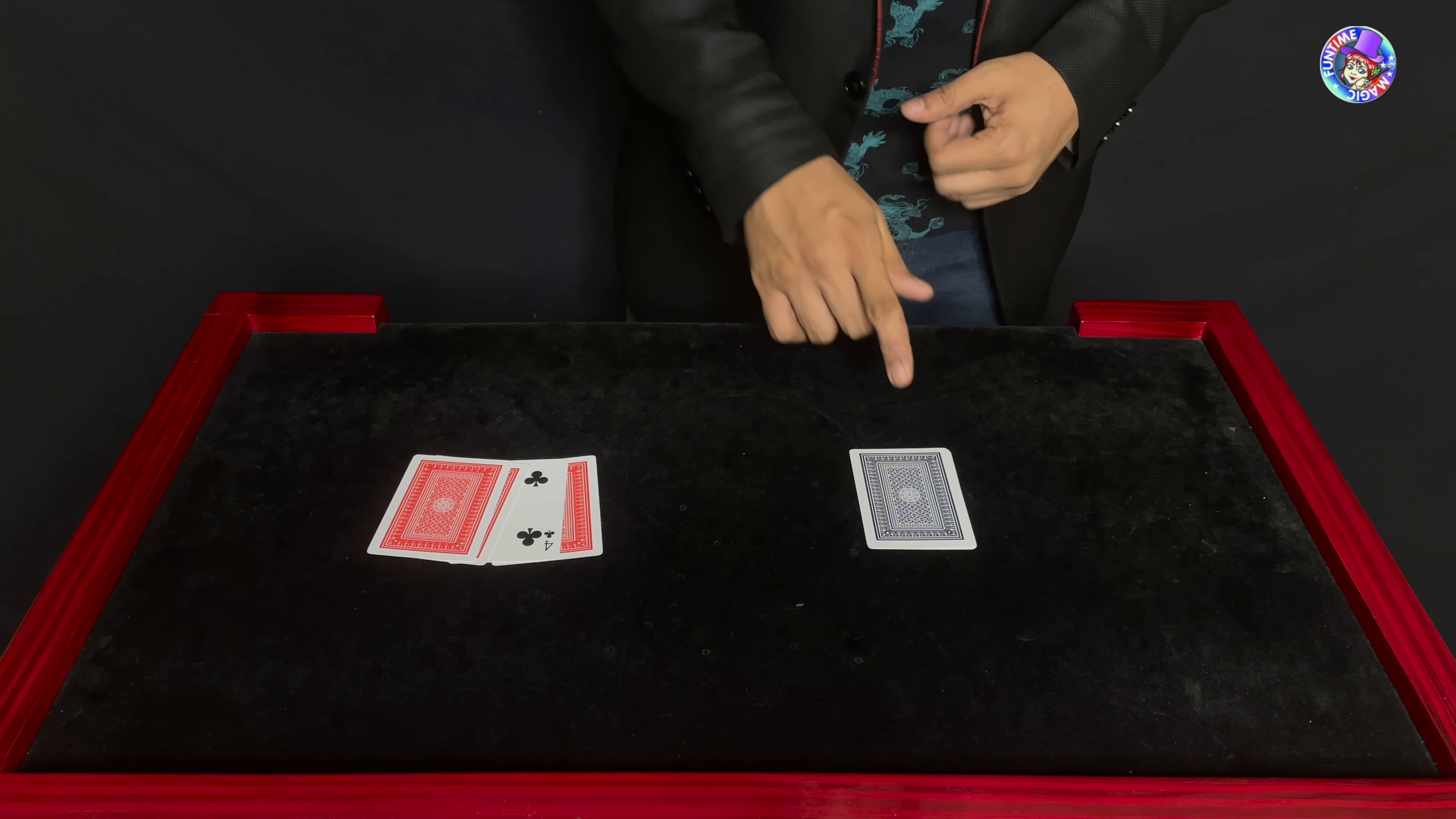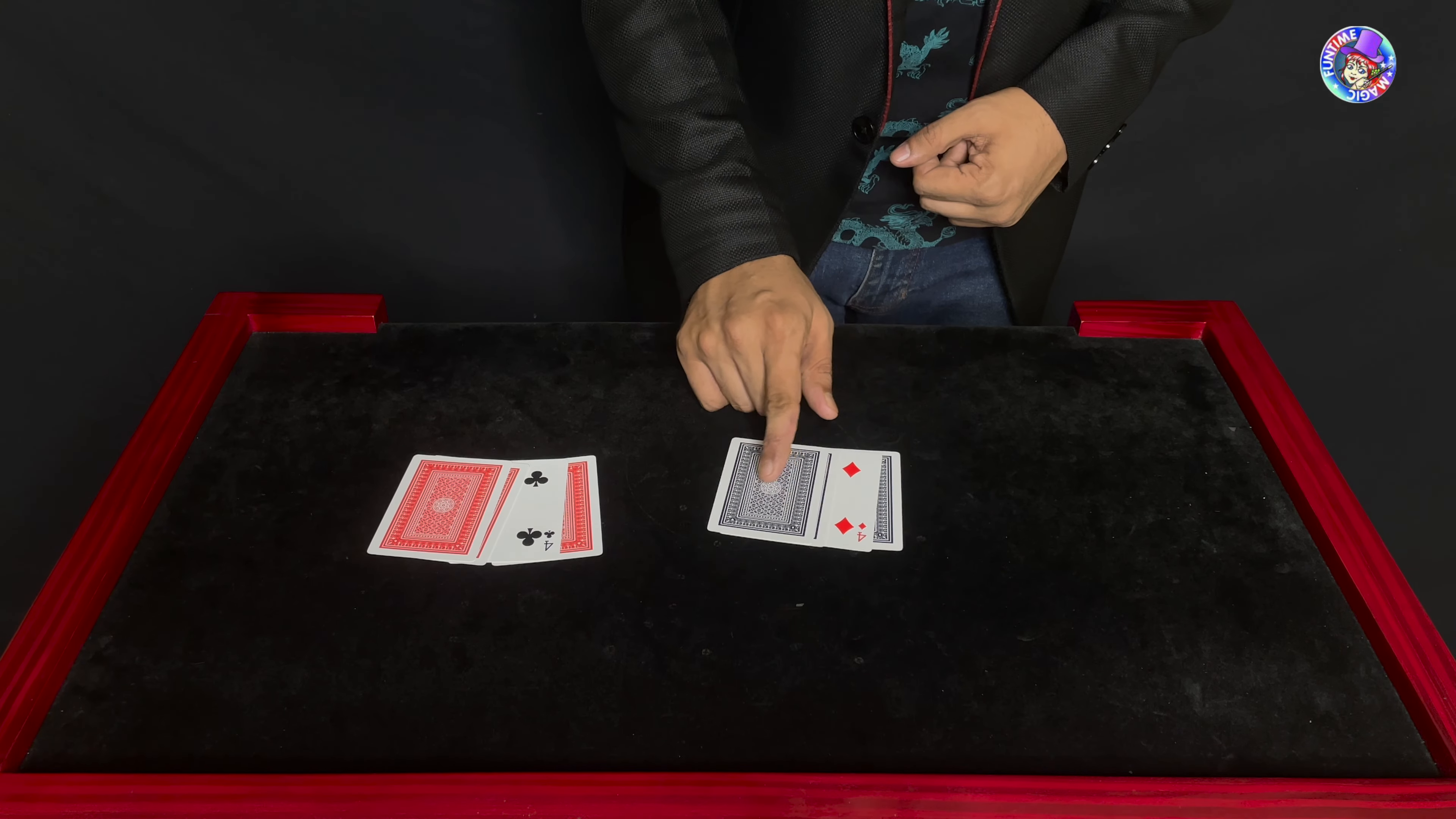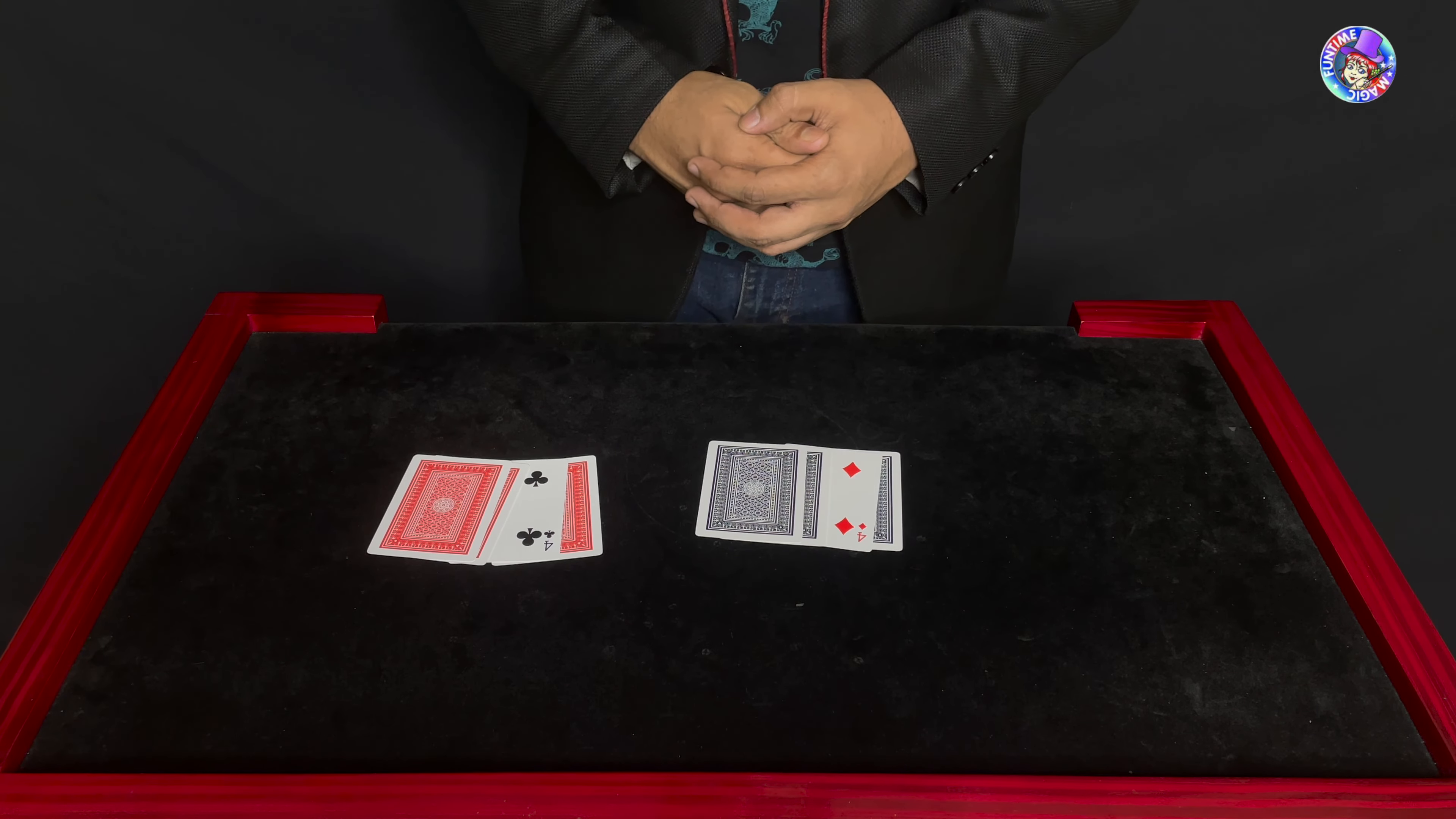And if I go ahead and spread the blue pile, you see that there's only one four face up. That is the red four that you chose, the four of diamonds.